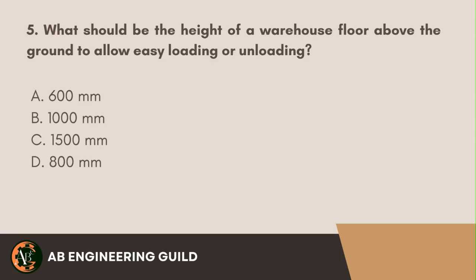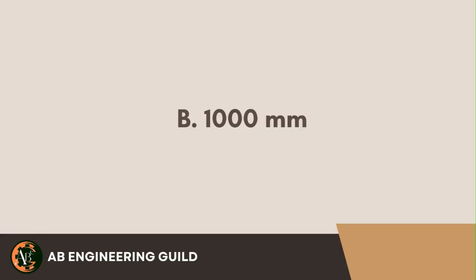Question 5. What should be the height of a warehouse floor above the ground to allow easy loading or unloading? A. 600 mm. B. 1,000 mm. C. 1,500 mm. D. 800 mm. Answer: B. 1,000 mm.